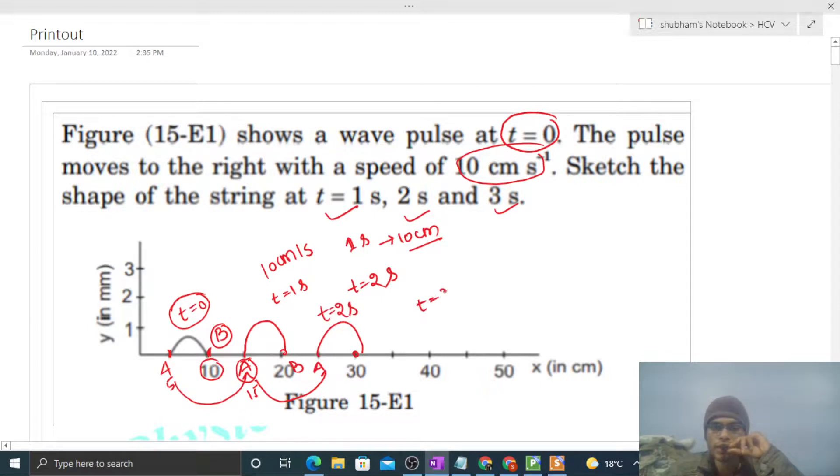At time t equals 3 seconds, end A will come to 35 and end B will go to 40. So this is how it will be. I think you have understood. It shifts towards the right because the speed is given in the forward direction, moving in the right direction, so that's why we take the displacement in the right direction.